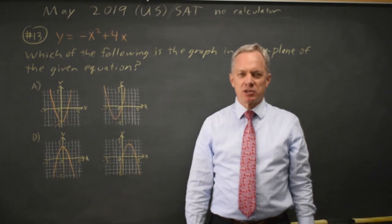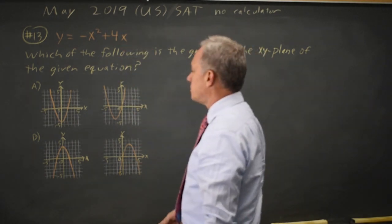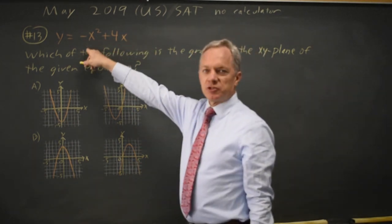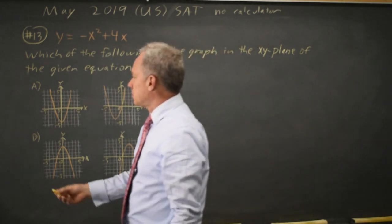This is Calculator question number 13 from the May 2019 US exam. College Board gives us a quadratic equation and asks which could be the graph. The leading coefficient is negative, so the correct answer will be a parabola that opens down.